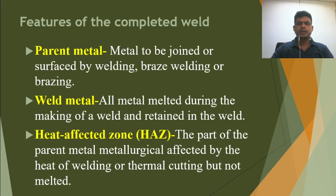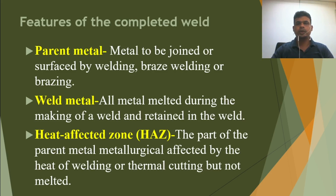Another term is the heat affected zone. What is the heat affected zone? It is the part of the parent metal metallurgically affected by the heat of welding or thermal cutting, but not melted. After the fusion line, that part has its metallurgical properties affected or changed, but that part is not melted. In this lecture I will show you the details of the heat affected zone, the fusion line, and the fusion zone.